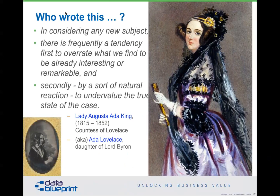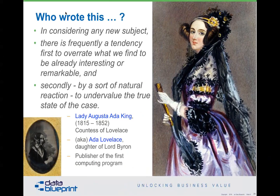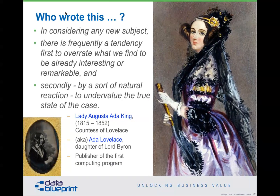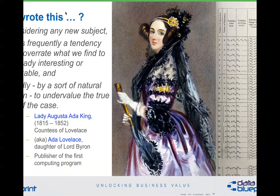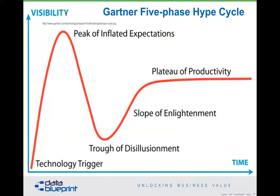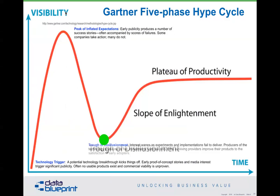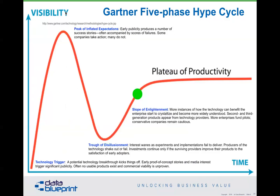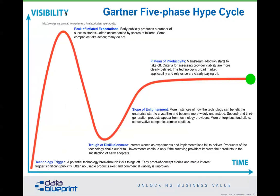When considering a new subject, there is frequently a tendency to first overrate what we find interesting and remarkable, and secondly by natural reaction to undervalue the true state of the case. This was written between 1850 and 1852 by the world's first programmer, Lady Ada Augusta King. The technology hype cycle starts with a technology trigger, rises to the peak of inflated expectations, drops to the trough of disillusionment, climbs back up to the slope of enlightenment, and then onto the plateau of productivity.